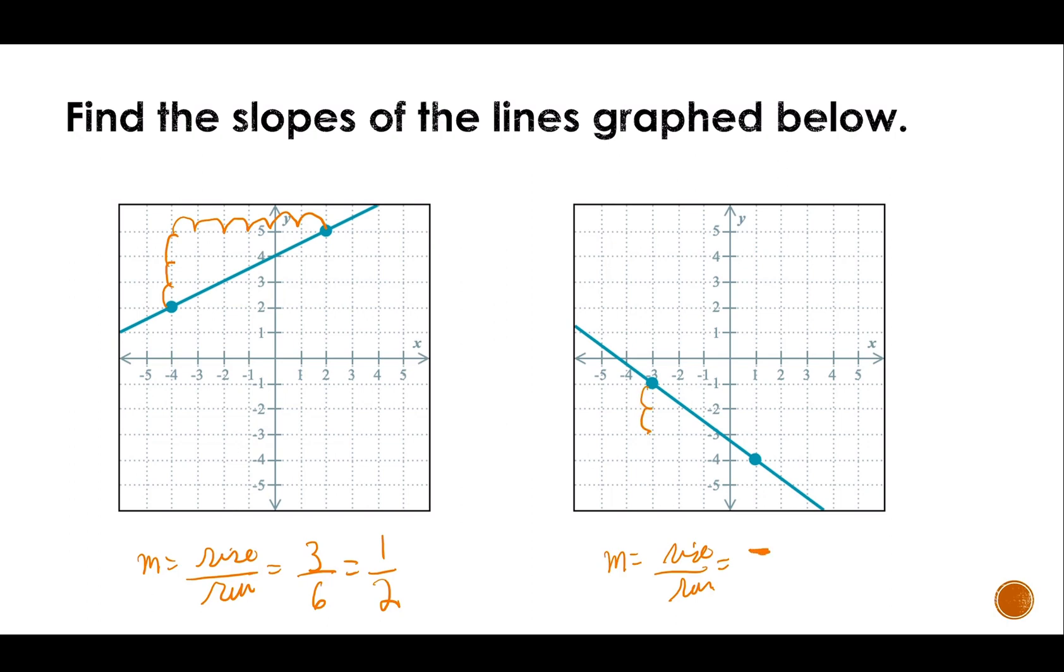So I go down one, two, three. Is that it? Yes, three. And then I go over one, two, three, four. So my slope is negative three-fourths.